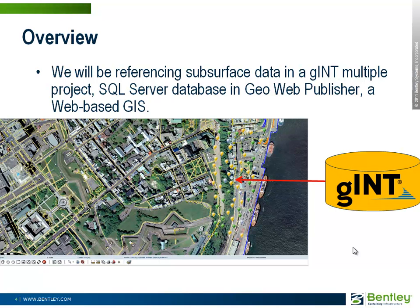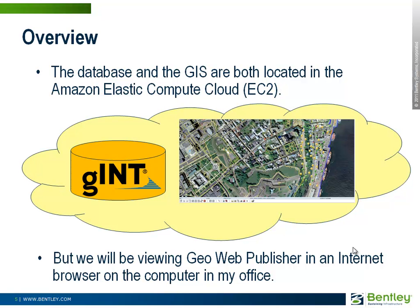We're going to be referencing subsurface data in Gint that's stored in a SQL Server database — a multiple project database — and displaying it in GeoWeb Publisher, which is a web-based GIS. As a side note, the database and the GIS server are both located in the Amazon Elastic Compute Cloud, EC2. That is not required; I want to show that it can be done and the behavior is very good. We're viewing this demonstration on an Internet browser on my computer, not within the web.